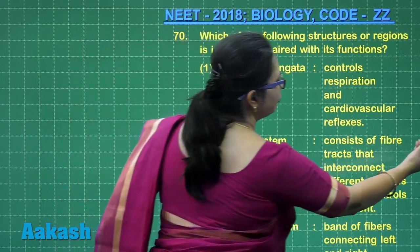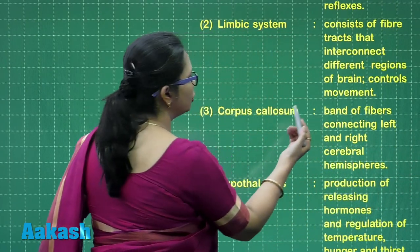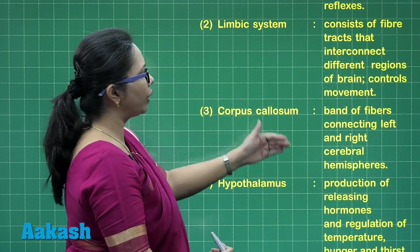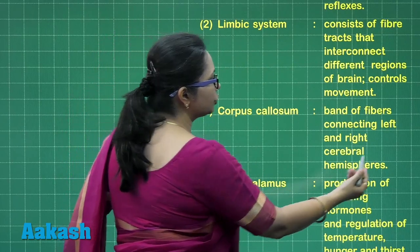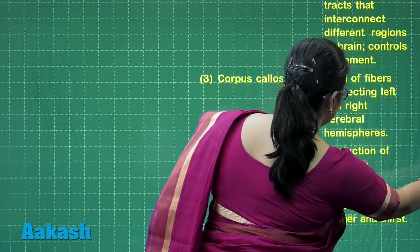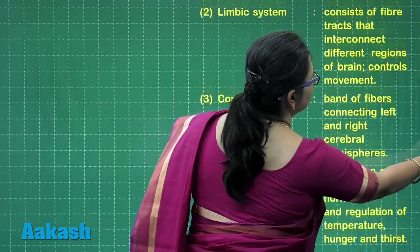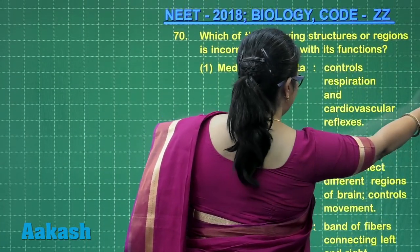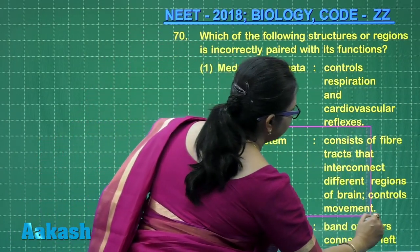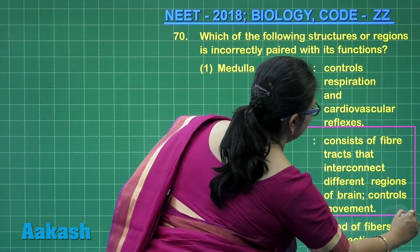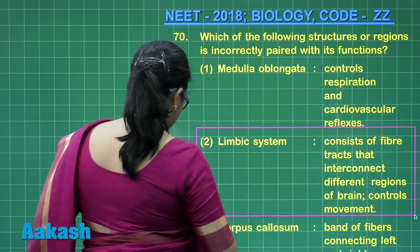Let us also review the other options. Corpus callosum — a band of fibers connecting left and right cerebral hemispheres — that is right. Hypothalamus produces releasing hormones and also regulates temperature, hunger, and thirst. After seeing these four options, we can easily say that the incorrect choice is option 2, which is our correct answer.